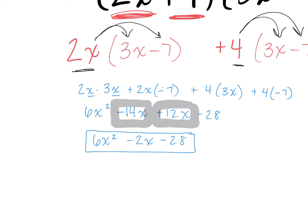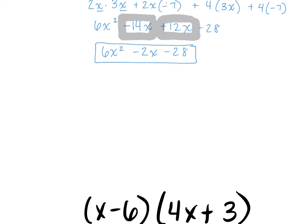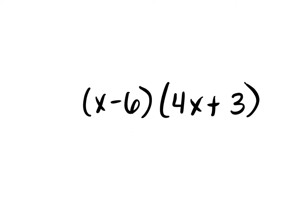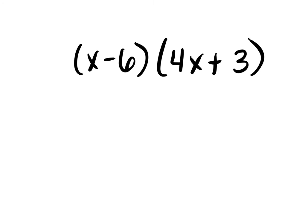One more the long way, and then I'll show you the shortcut. x minus 6 times 4x plus 3. Who remembers what's the first thing I need to do? Alan? Good — break up the first one. So let's write x over here, and what's the other term? Minus 6. What do I write next to those? Yes, so I'm going to write 4x plus 3 next to each of them.